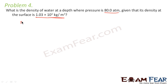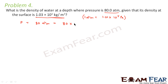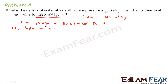The pressure at that depth is 80 atmospheres. Since 1 atmosphere equals 1.01 × 10⁵ Pascals, the pressure equals 80 × 1.01 × 10⁵ Pascals. We don't know the exact depth, so let us consider that this depth is h, at which the pressure is 80 atmospheres.